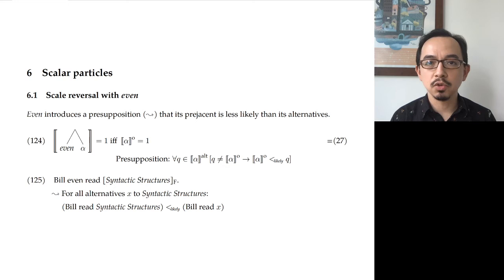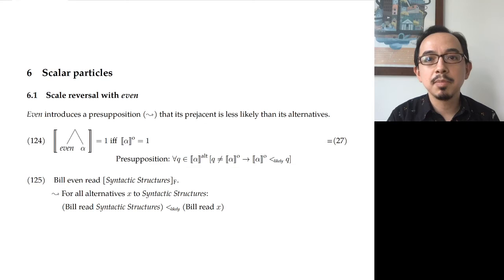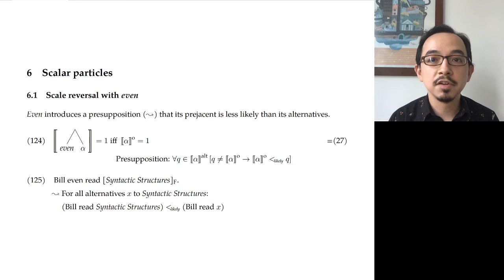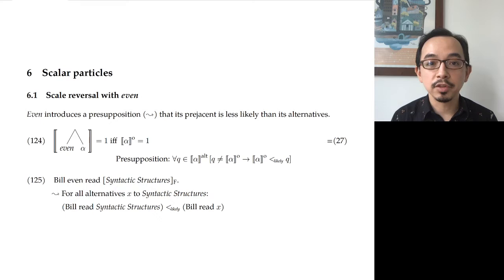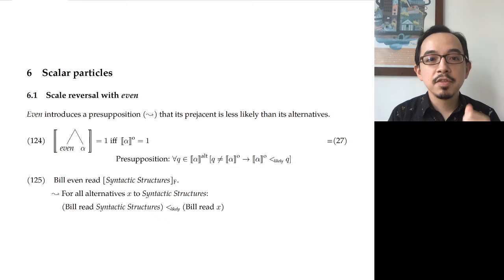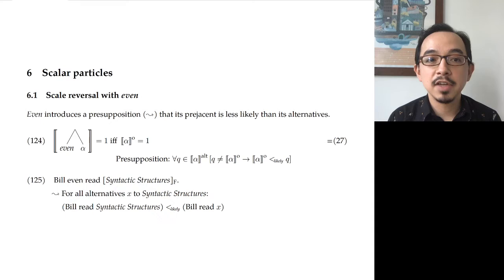One is this issue of so-called scale reversal in the literature on scalar particles. Let's first get started by reiterating what the meaning of 'even' generally is. Even introduces a presupposition or some kind of not-at-issue inference that the adjacent proposition is less likely than its alternatives, or perhaps that it's more surprising or more noteworthy. The pre-jacent is somehow special — it's less likely, it's noteworthy — and that's the meaning we derive in example 124.